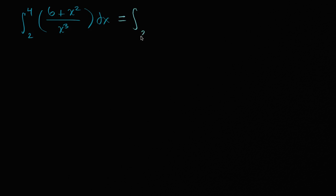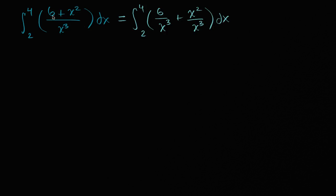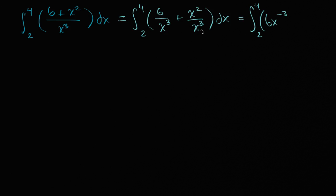This is equal to the integral from two to four of six over x to the third power plus x squared over x to the third power dx. I just separated the numerator out, dividing each of those terms by x to the third power. This means six over x³ becomes six x to the negative three, and x squared over x to the third is one over x.